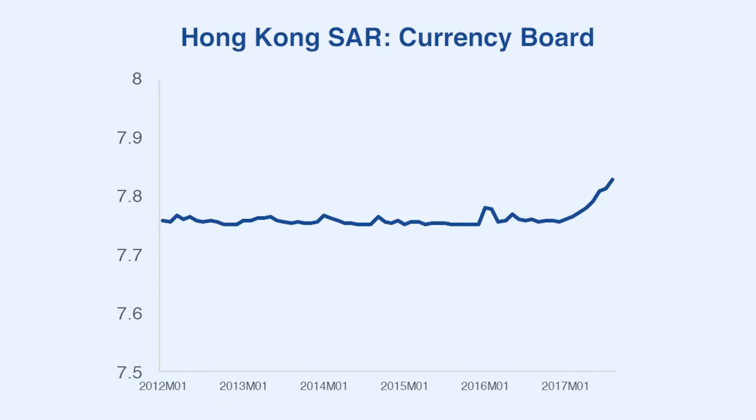I'll give you an example of a hard peg arrangement. Since October 1983, the Hong Kong dollar has been linked to the United States dollar under a currency board arrangement, the linked exchange rate system.